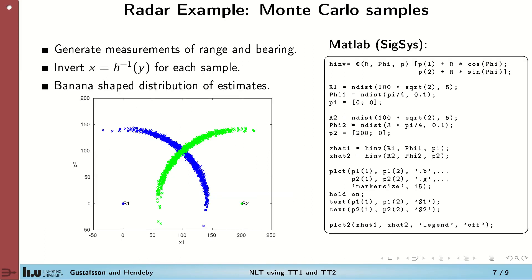To illustrate the problem, we use samples of the measurements transformed to the Cartesian base. We see that the distribution is rather banana-shaped. And this is a result of having good range information but poor bearing information.